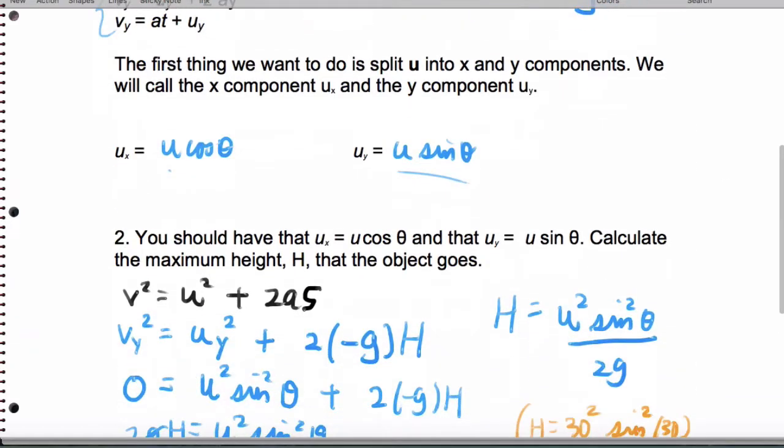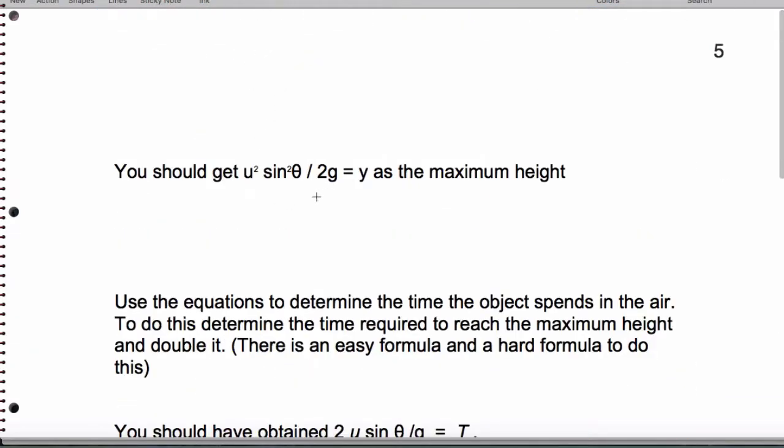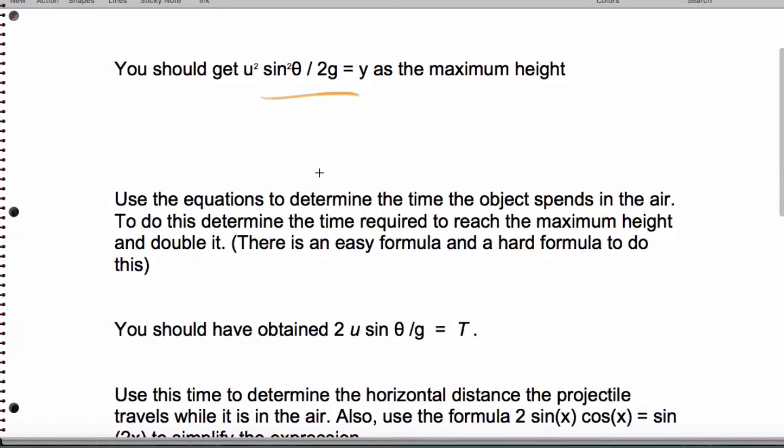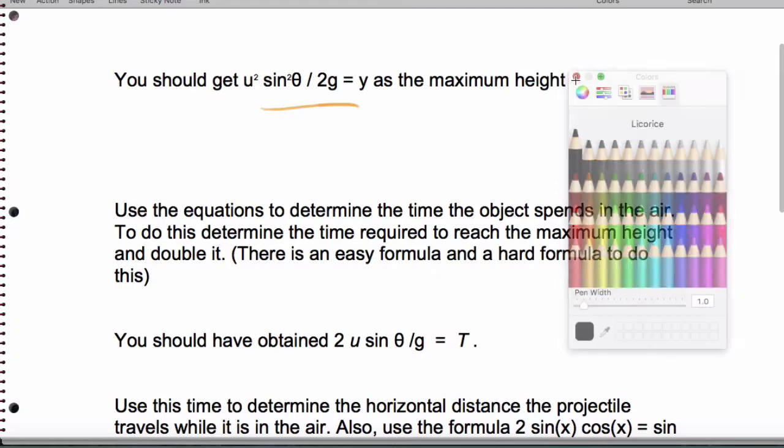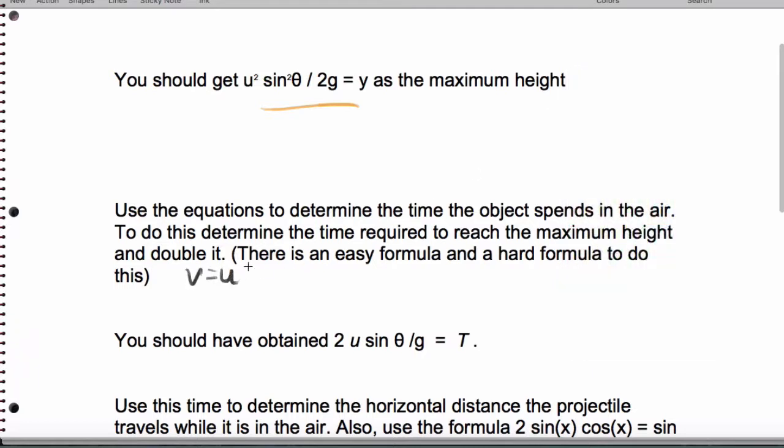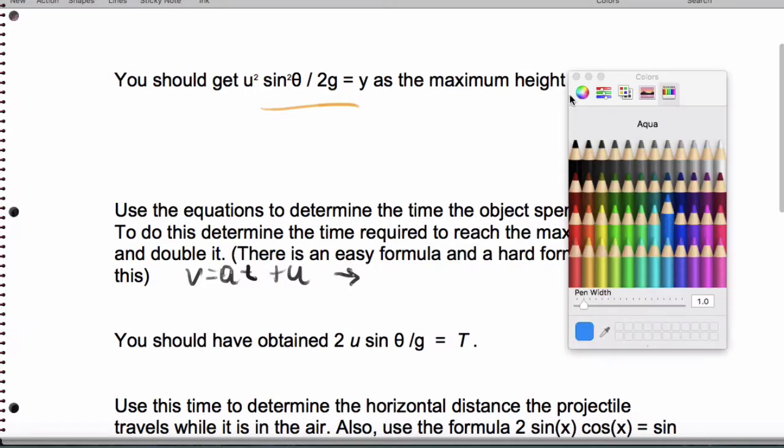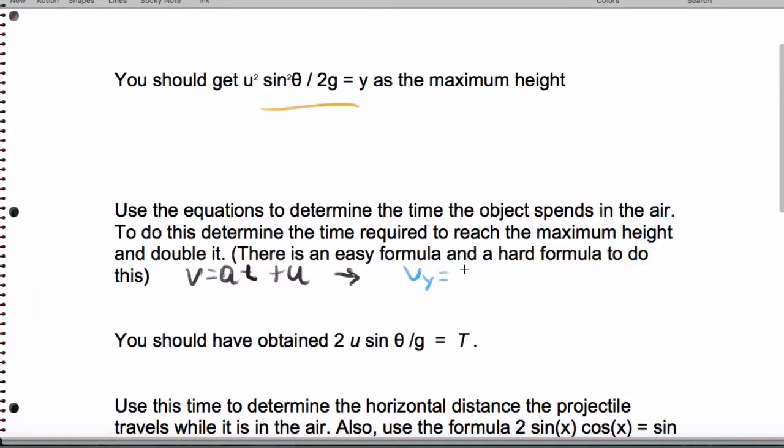Next, we want to get the hang time, and we did derive the correct formula. Let's again go to a data booklet formula. The data booklet says V equals AT plus U, true but not useful. We need to adapt this for this problem. We know we have Vy equals negative G, because it's downwards acceleration, times T plus Uy.